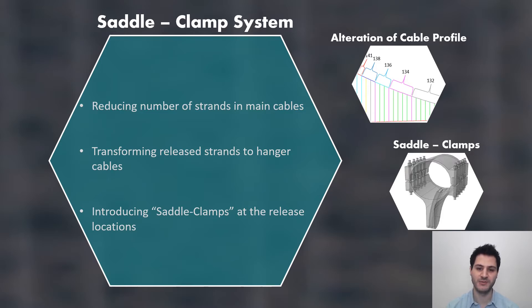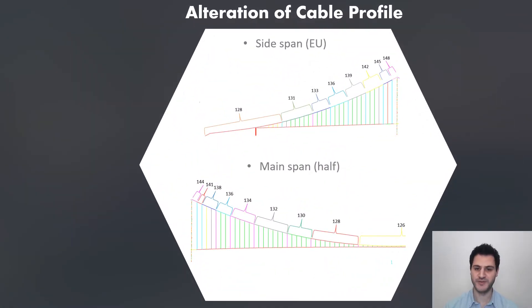Let's have a closer look at changing cable profile and saddle clamps. As shown in the figure, strands in the main cable are reduced from towers to main and side spans. Obviously, design loads on main cable are higher around towers, and for the current design, all spans were designed based on very limited region. However, in the saddle clamp system, strands are released with frequent intervals in order to come up with solid findings.